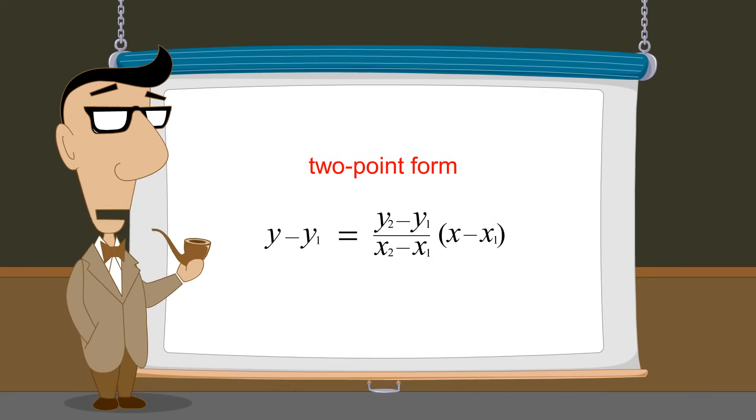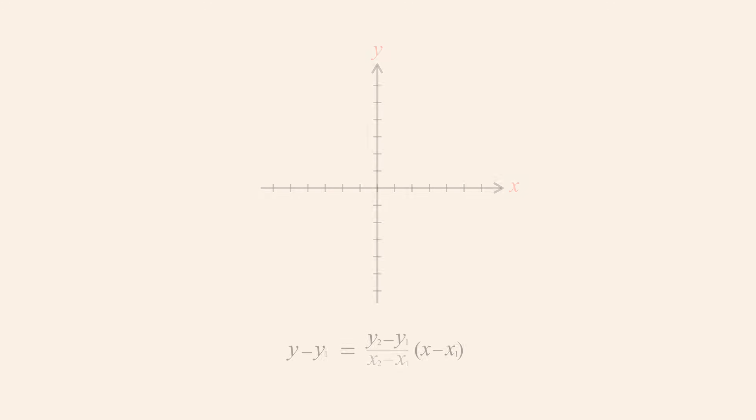Like the slope-intercept and point-slope forms, the two-point form cannot be used to describe a vertical line. This is because the x-coordinates of all points on a vertical line have the same value. No matter which two points we pick for the two-point form, the constants x1 and x2 will be equal. Since x1 and x2 have the same value, the denominator x2 minus x1 in the equation will be zero. The equation will therefore include a term divided by zero, which is undefined.